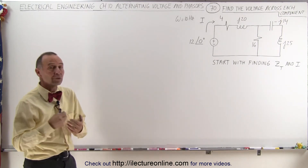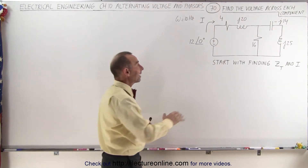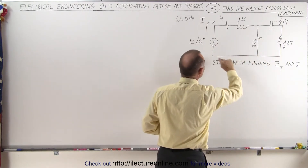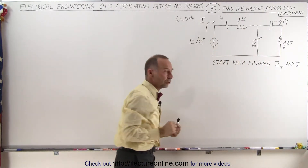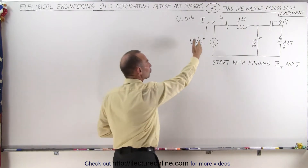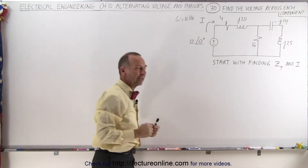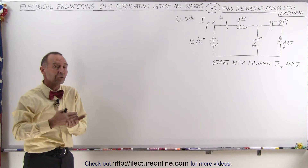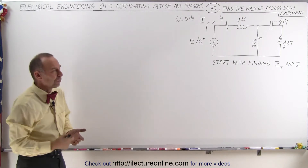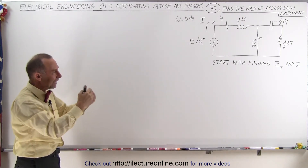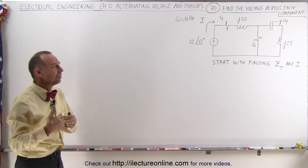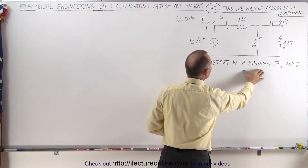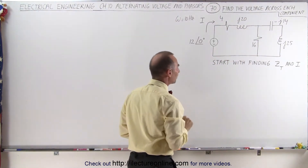What we're going to do is start out by finding the total impedance of the circuit and then finding the current through the circuit — the main current leaving the source. At that point, we're going to start a second video, perhaps even a third video to finish the problem. So let's start it in sections that we can easily manage. We're going to start by finding the impedance inside the circuit.